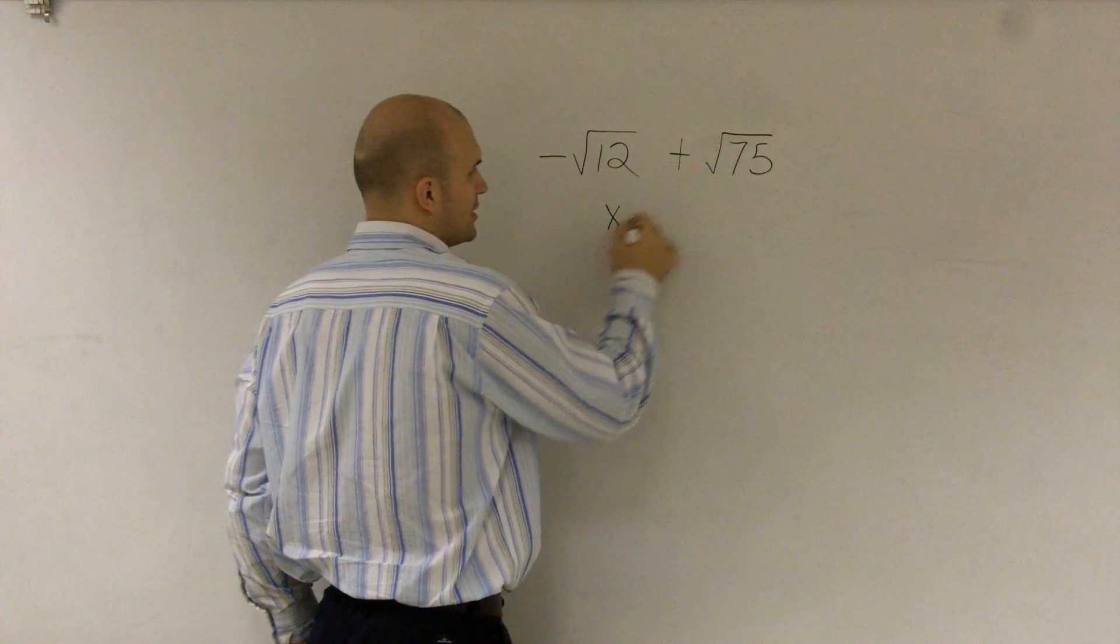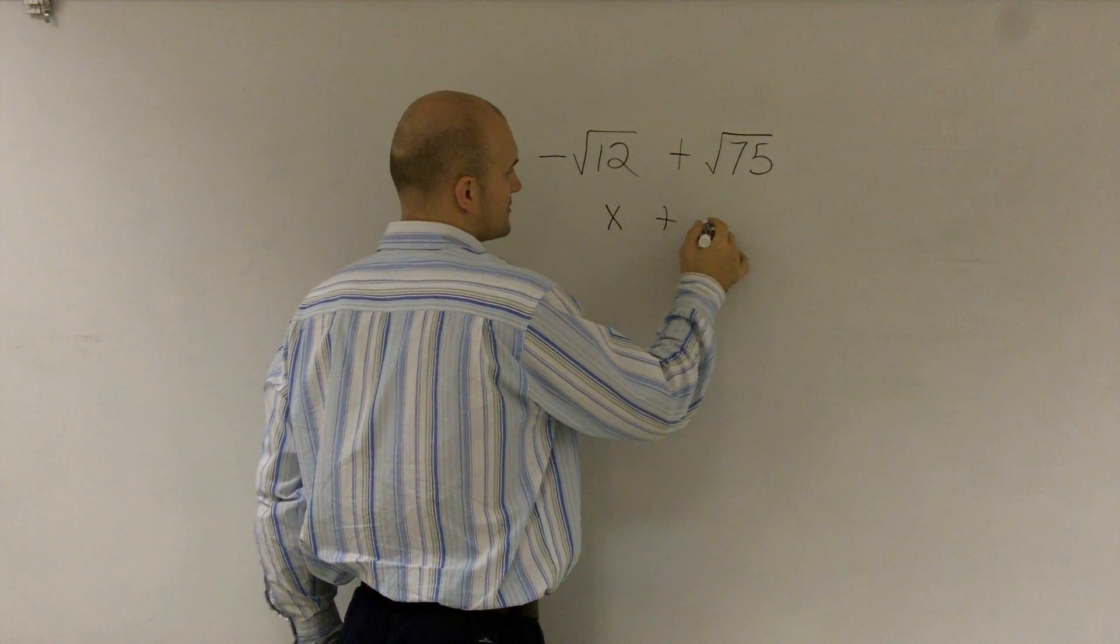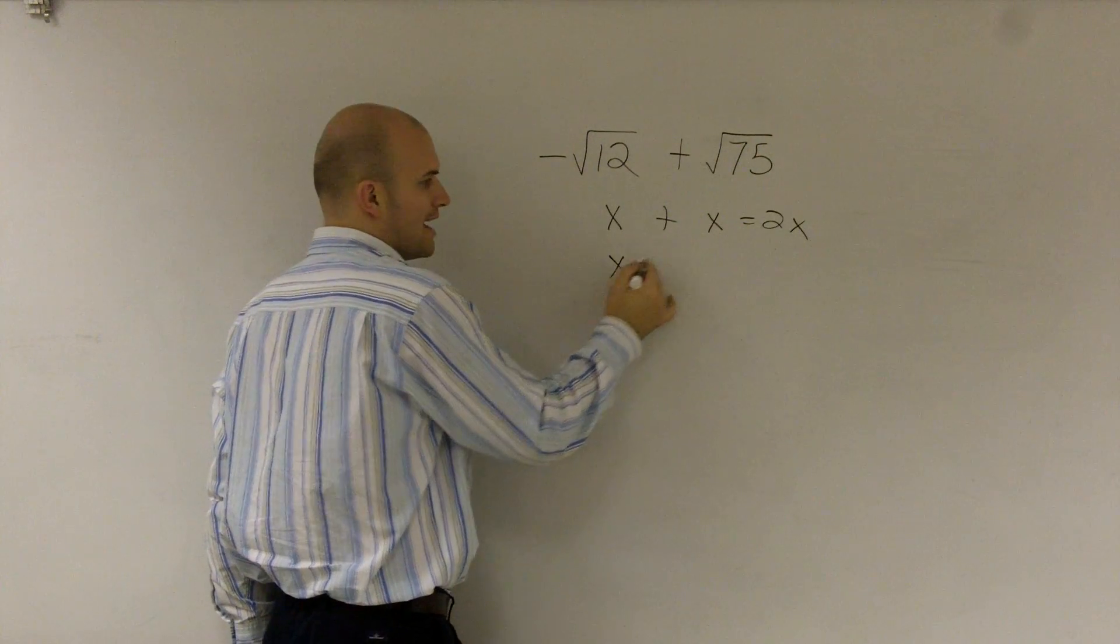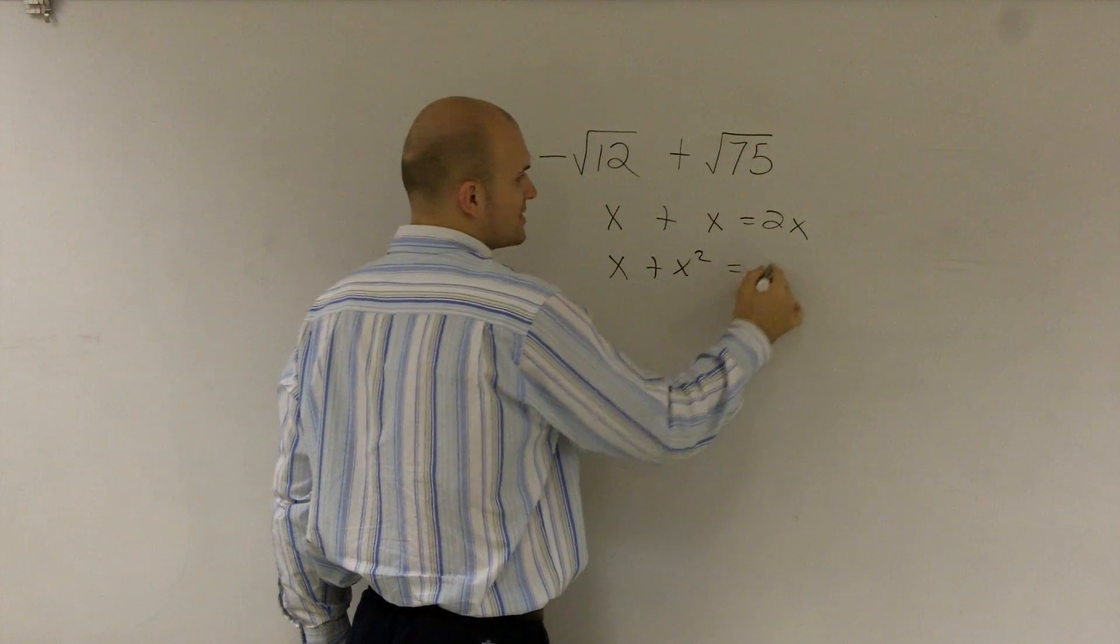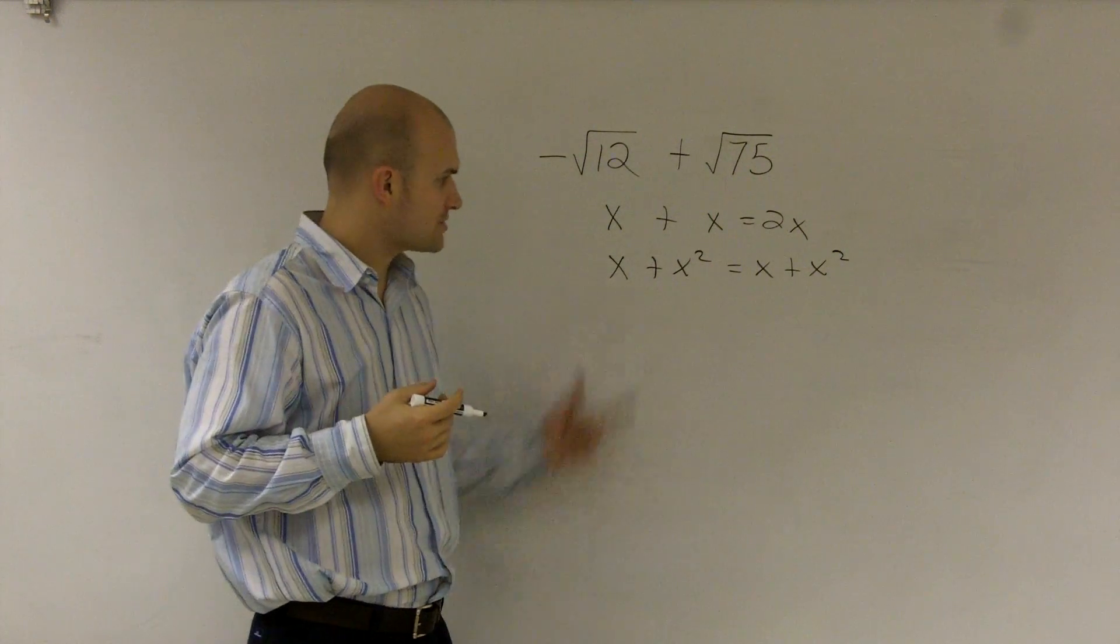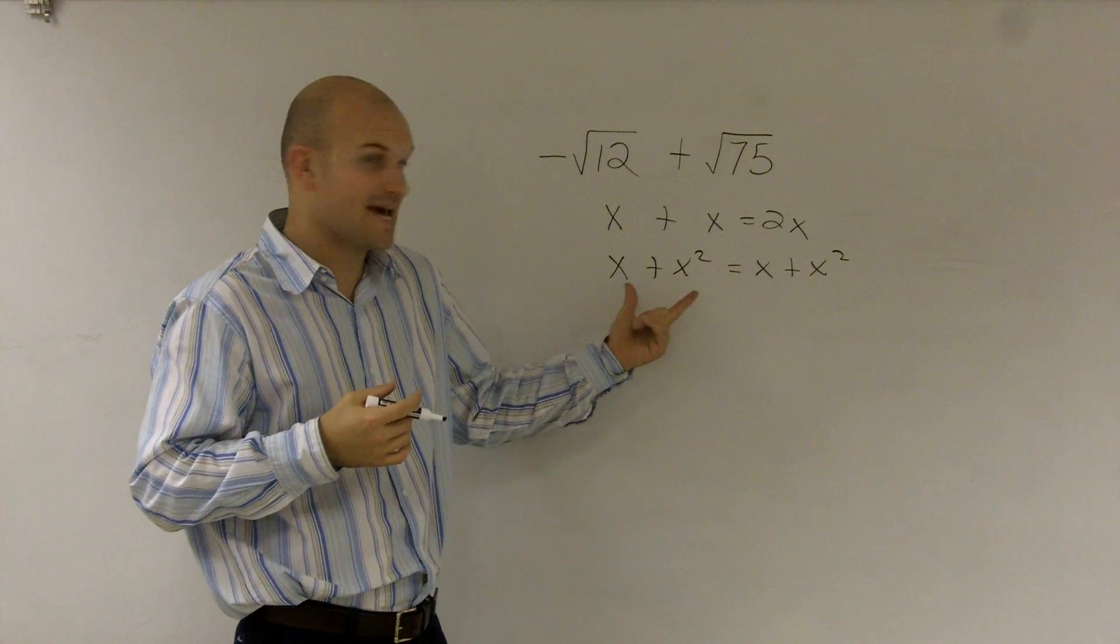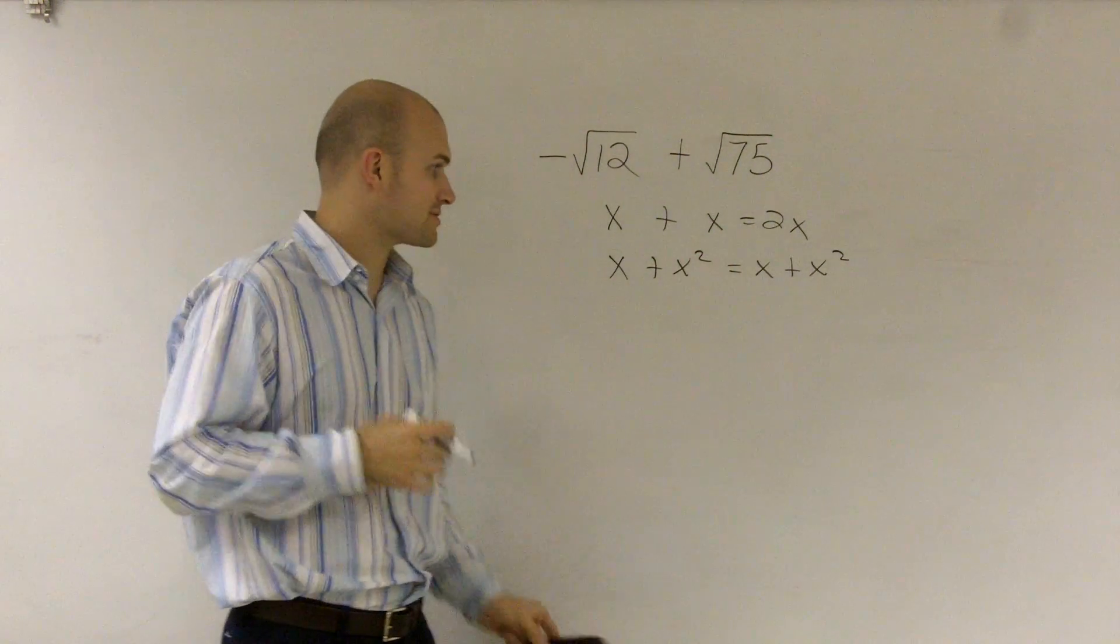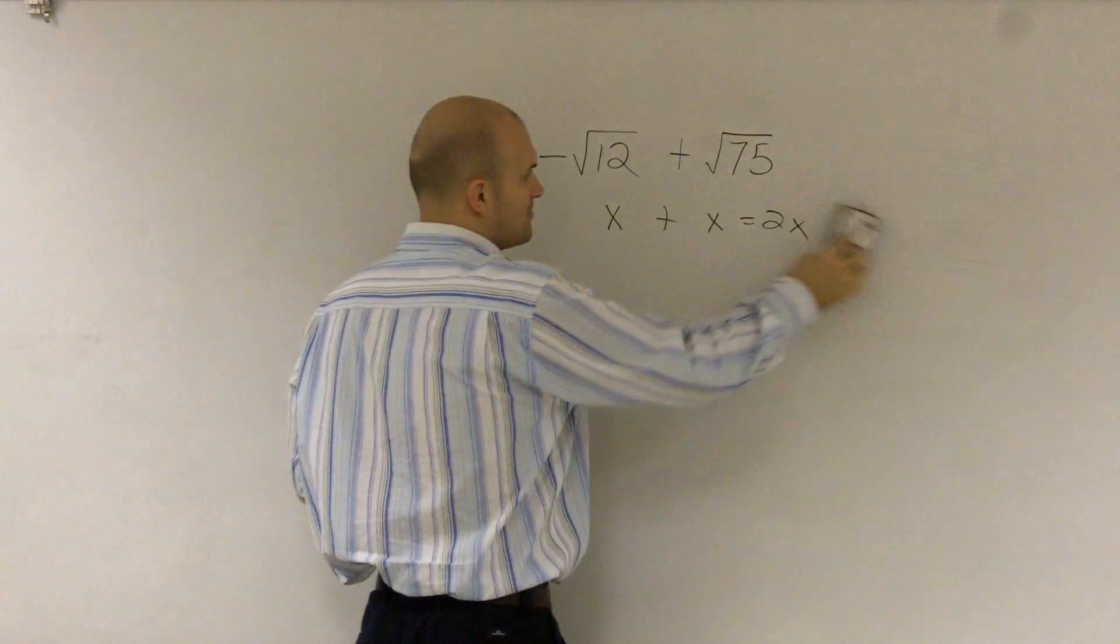Just like when I had to do x plus x equals 2x. That was only true since these were the same. x plus x squared was x plus x squared. Those are not the same terms. Even though they still deal with x's, this is to the first degree, that's to the second degree. So they're going to be different numbers. So we can't combine them.